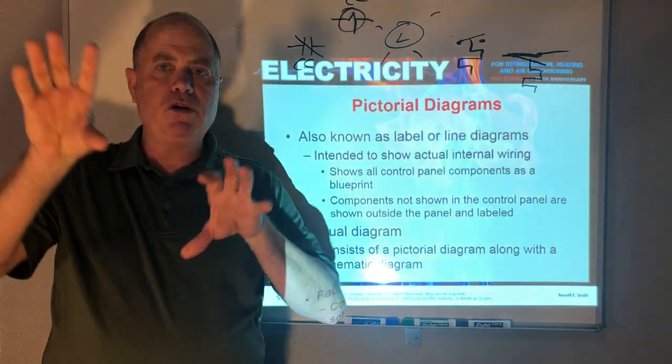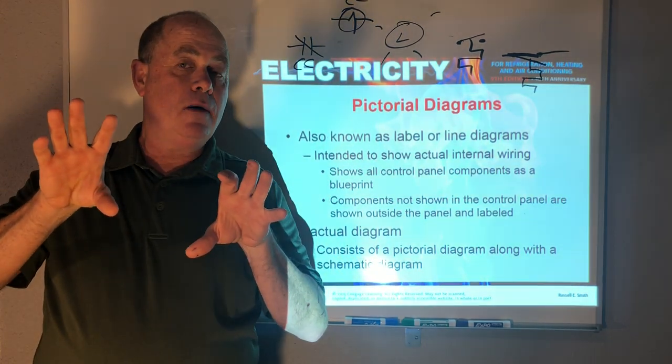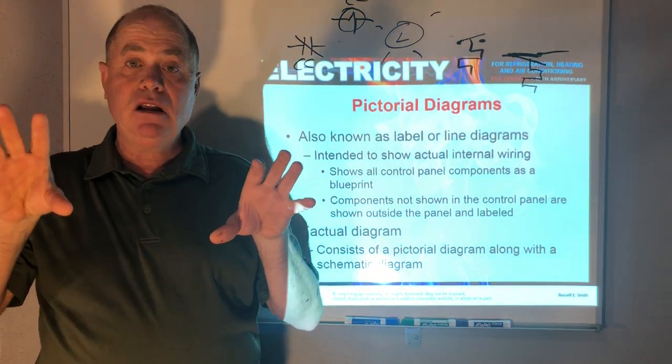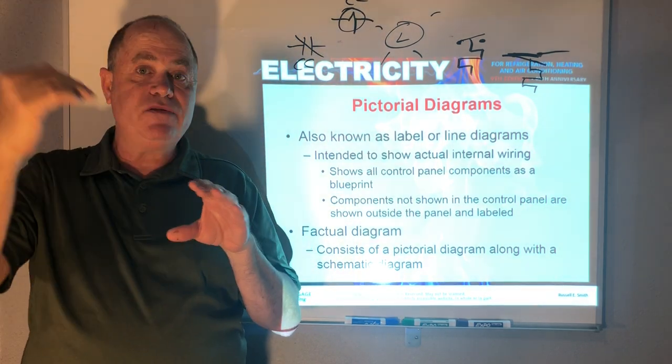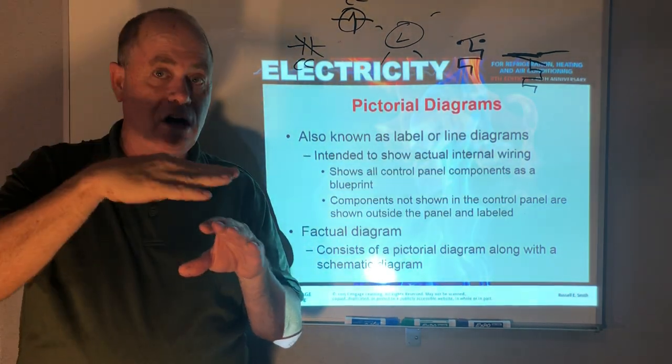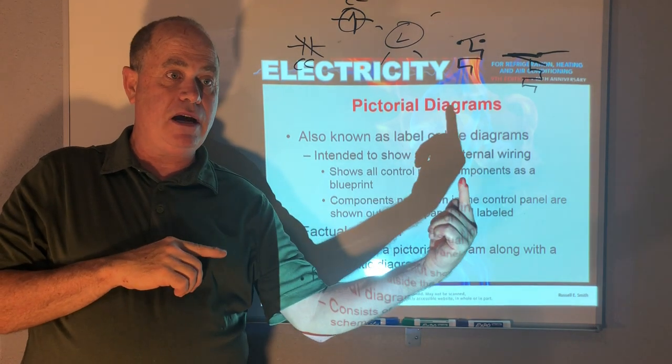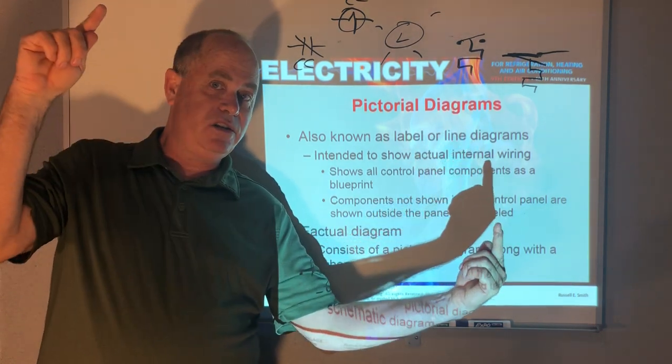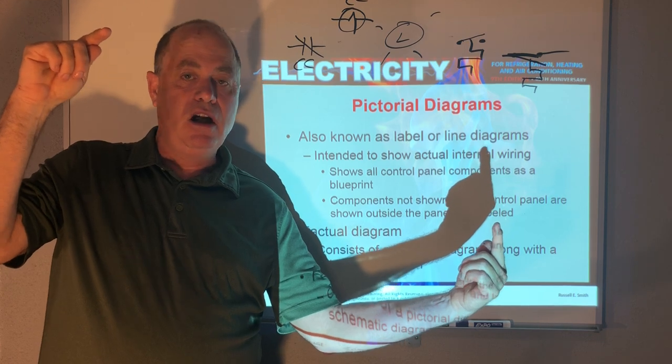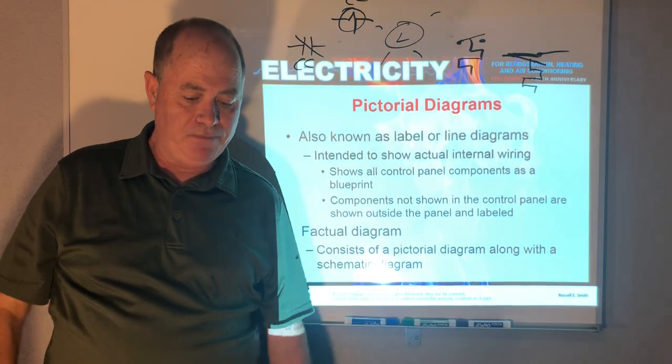Now pictorial diagrams is a little different. This kind of shows you where the components are located in a panel. And it also will kind of tell you different wire numbers or colors and where they do actually terminate. So that if over here you have wire 51, then you can see the other end is over here on this component wire 51.